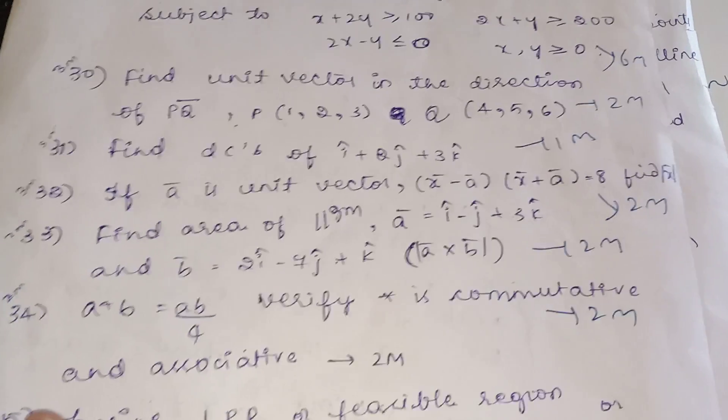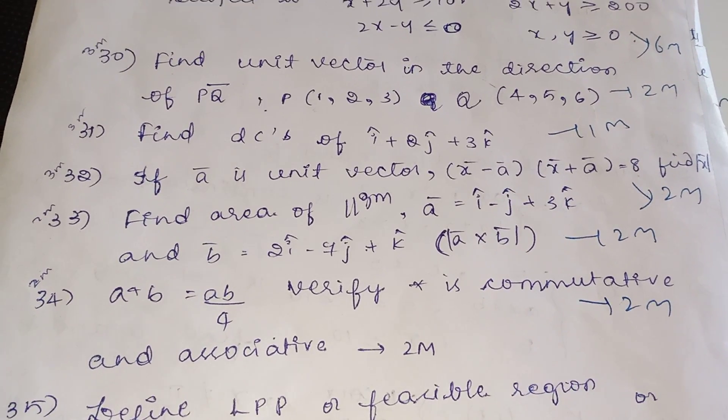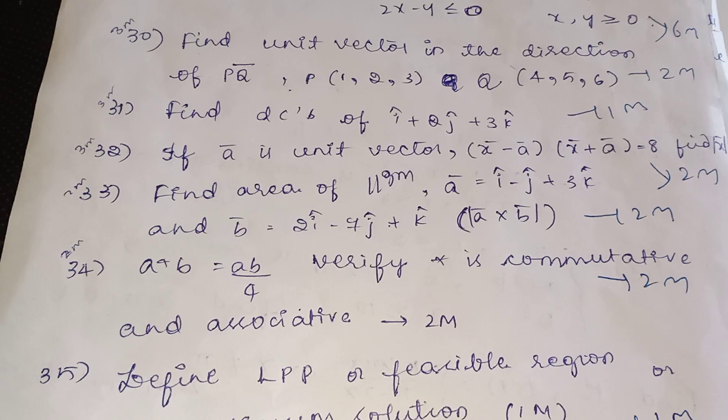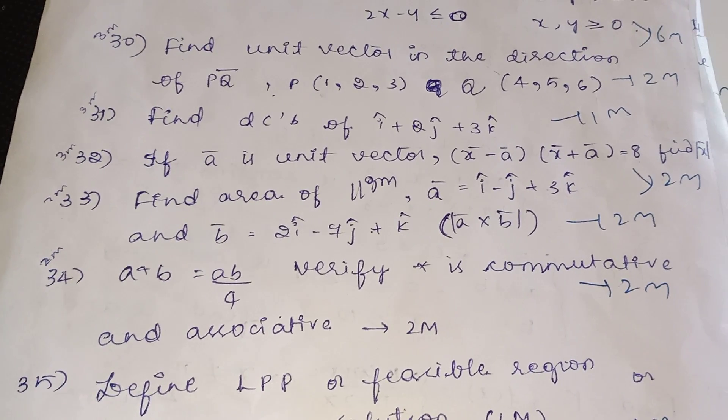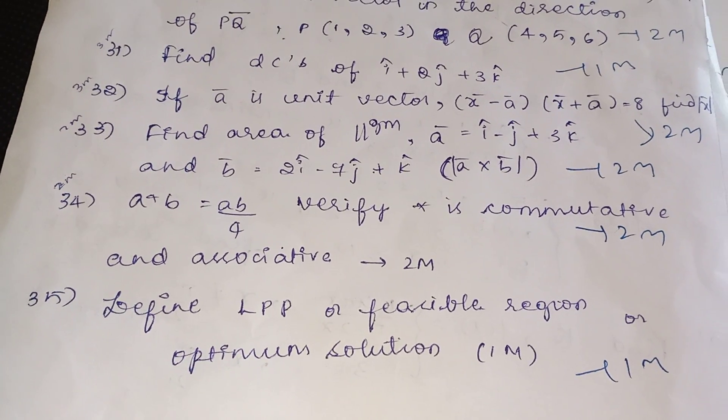And relation functions, two marks they will give. a star b = ab/4, verify star is commutative or associative. Or sometimes a star b = ab/4, find the identity element also they will ask for one mark or two marks. Next, define LPP or feasible region or optimal solution. One more question.